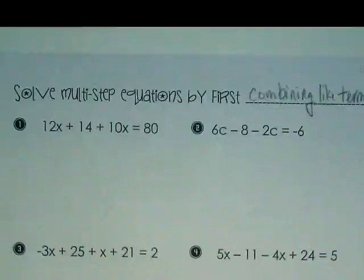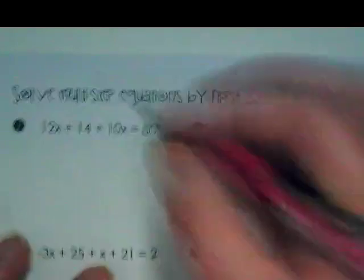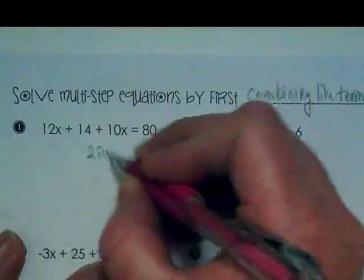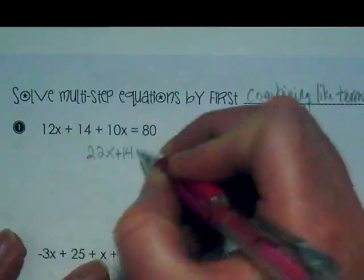What needs to be combined on the left side here in problem number one? 12x and 10x. So we're going to rewrite this as 22x plus 14 equals 80.